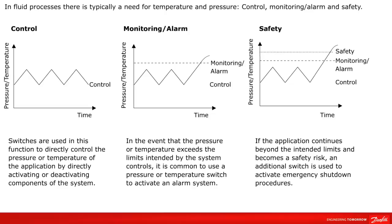In most fluid processes, temperature and pressure switches provide three main functions: control, monitoring, and safety. The control function is shown by the graph on the left. Switches are used in this function to directly control the pressure or temperature of the application by directly activating or deactivating components of the system. In the event that the pressure or temperature exceeds the limits intended by the system controls, it is common to use a pressure or temperature switch to activate an alarm system, shown by the graph in the center. If the application continues beyond the intended limits and becomes a safety risk, an additional switch is used to activate emergency shutdown procedures.